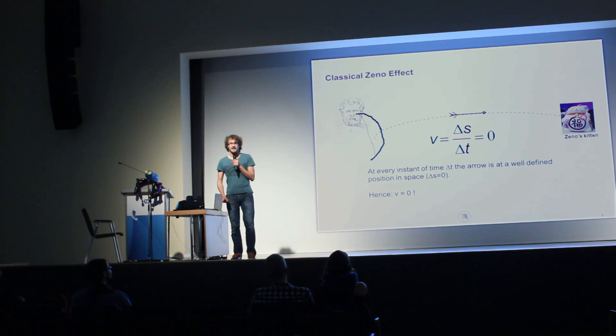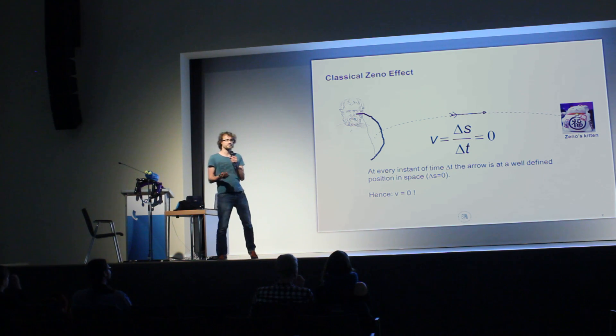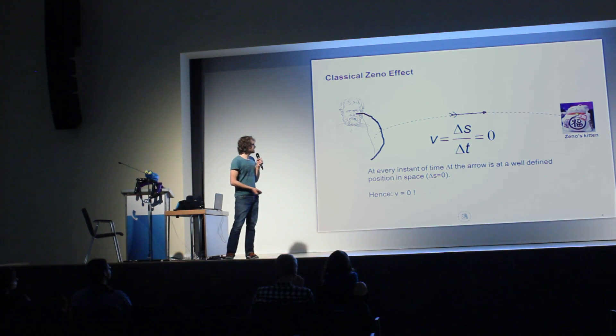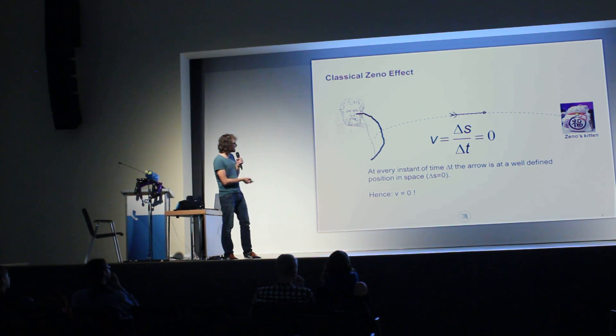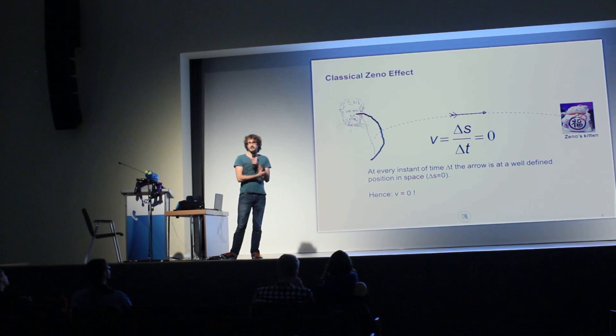A few years later, while Zeno was hunting cats in his backyard, then he made a discovery that this is indeed true, so the velocity is always zero. Because what he had learned is, velocity is the distance, delta s, that is travelled in time, delta t. So now, at every instant of time, an object, like this arrow, is always at a well-defined position in space.